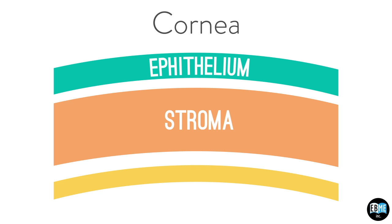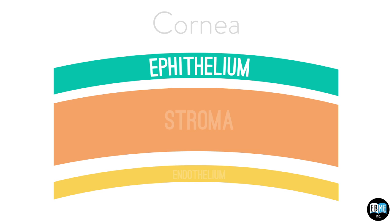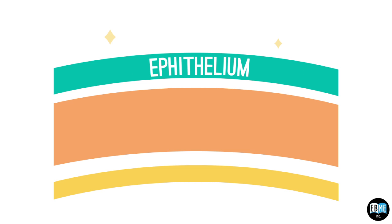The main layers also include a central stroma and an inner part called the endothelium. If the surface epithelium becomes damaged or scratched, it will regenerate without harming vision. This can happen as quickly as 24 hours after an injury.